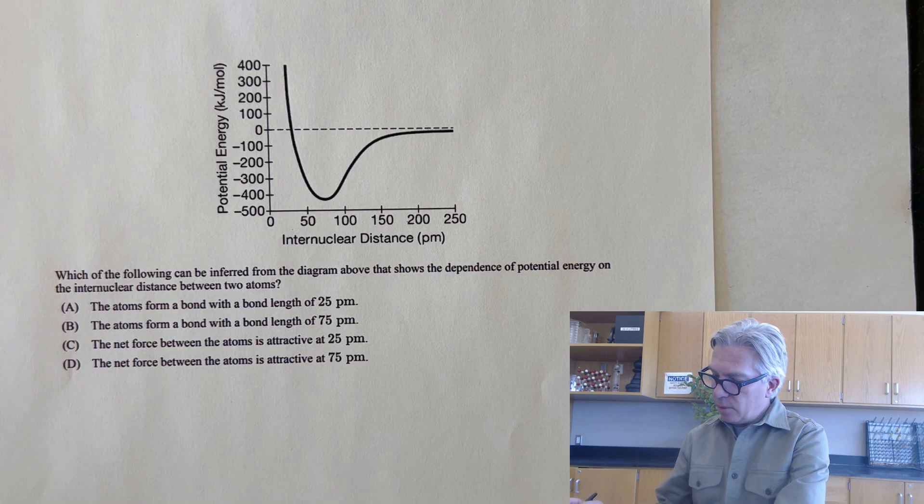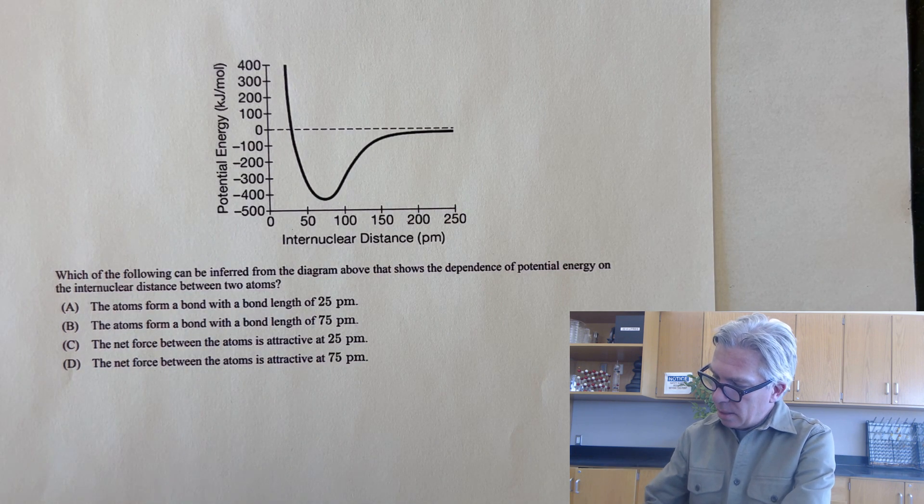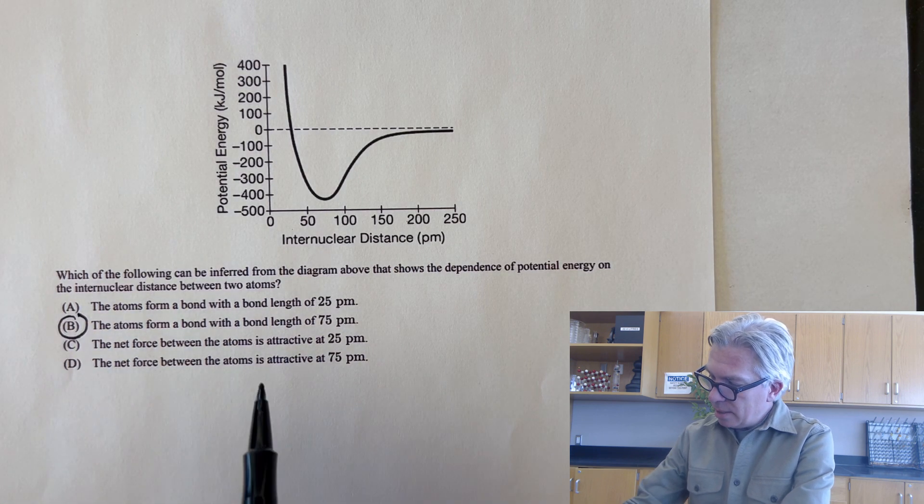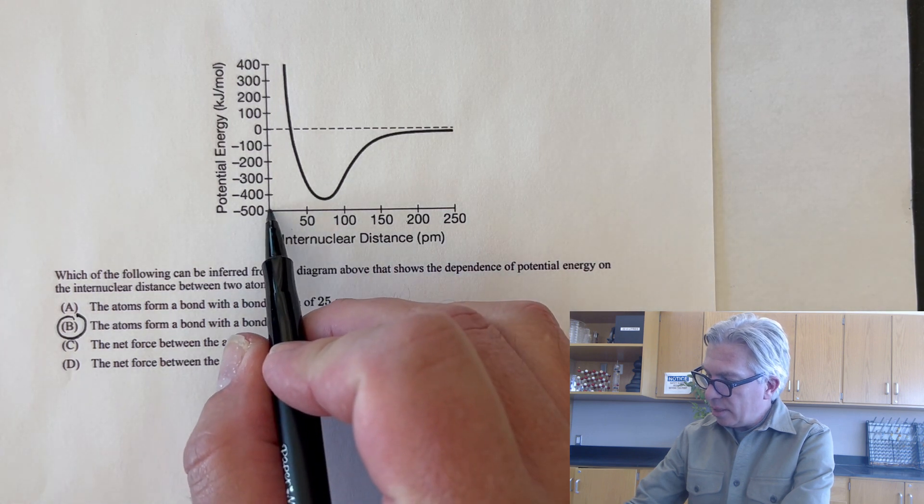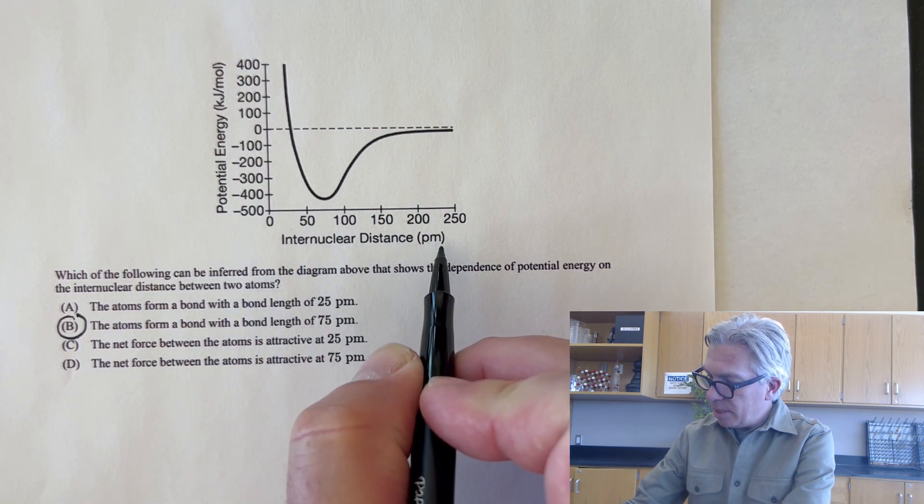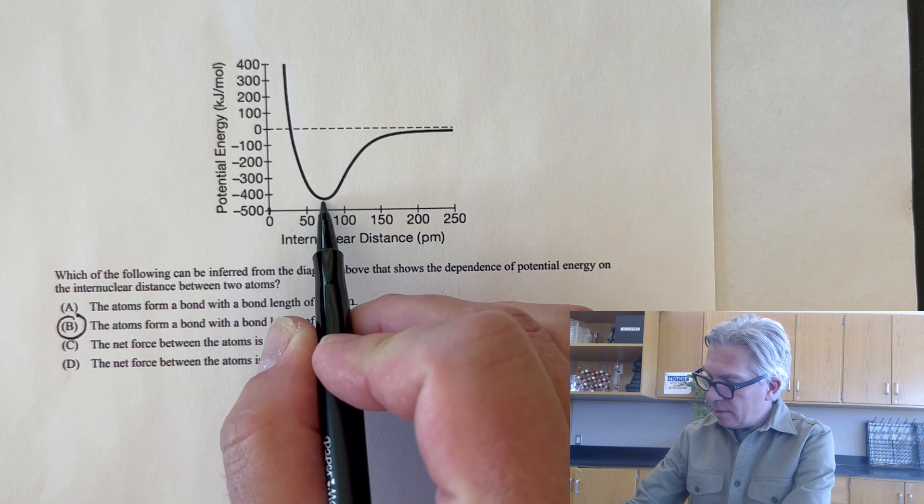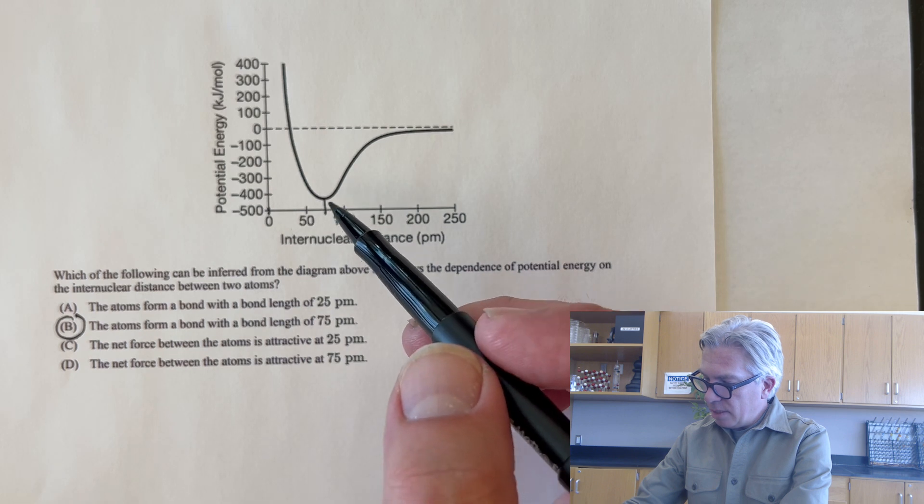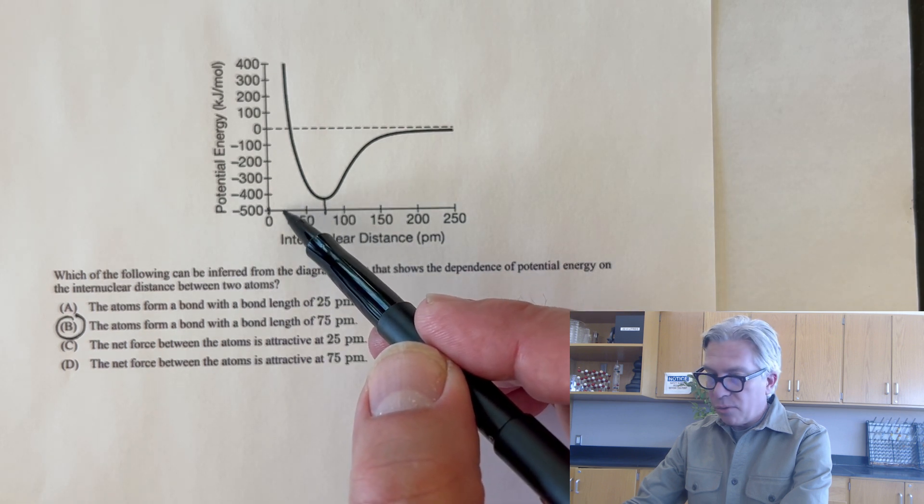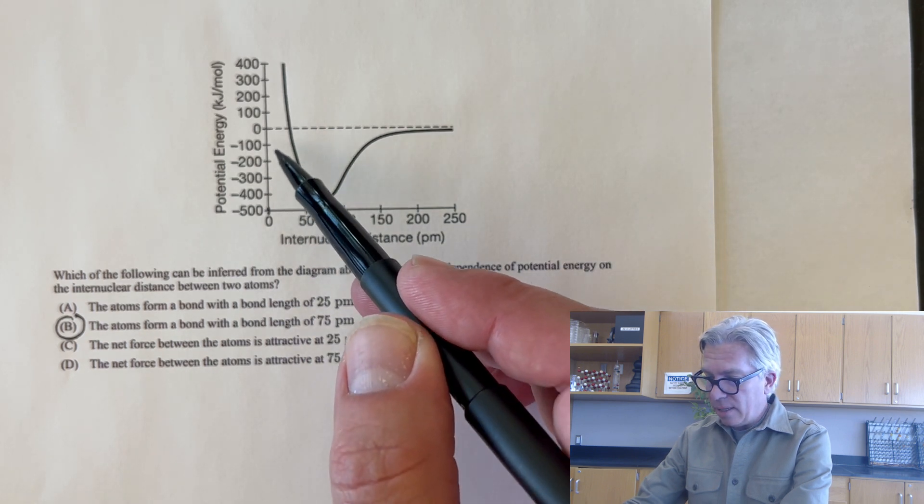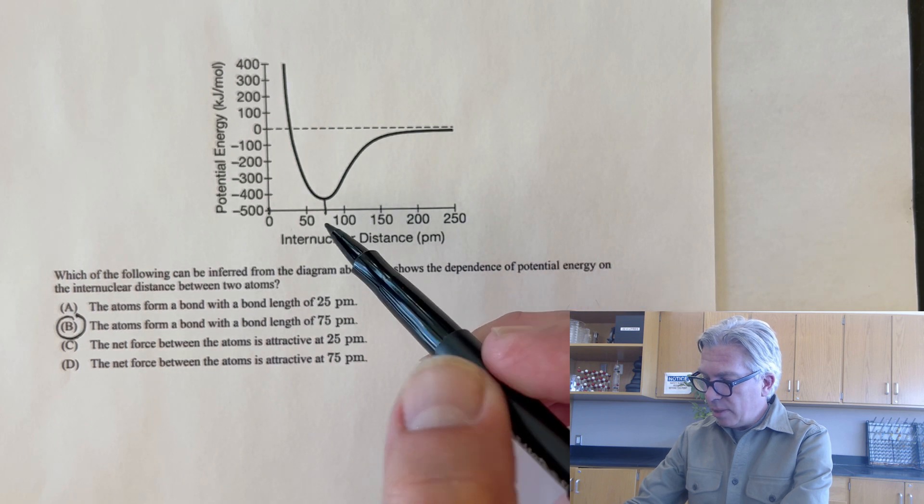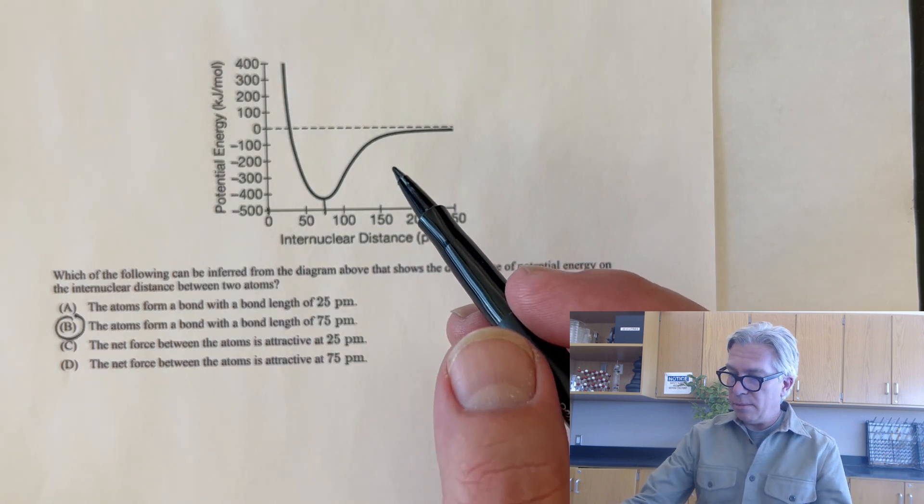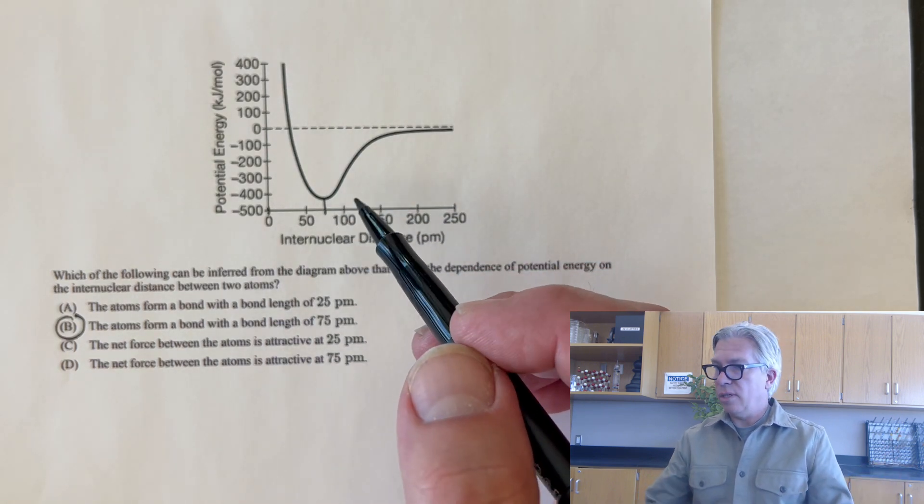And if you were able to pick letter B, the atoms form a bond with a bond length of about 75 picometers. We're right about 75. It would not be letter C because if we're at 25, the net force would be repulsive, sending it back a little away from each other. And it would not be attractive at 75 picometers because they're balanced. We've achieved the energy minimum. So the only good answer there is B.